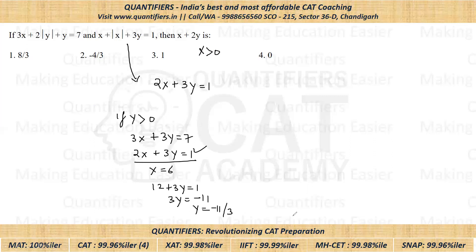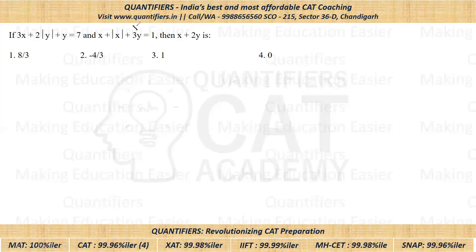So that means X is definitely positive and Y is definitely negative. Now we'll directly get the two equations: since X is positive and Y is negative, this first equation would become three times X minus two Y plus Y, so that is three X minus Y equal to seven. And the other equation: X plus X plus three Y, so that is two X plus three Y is equal to one.